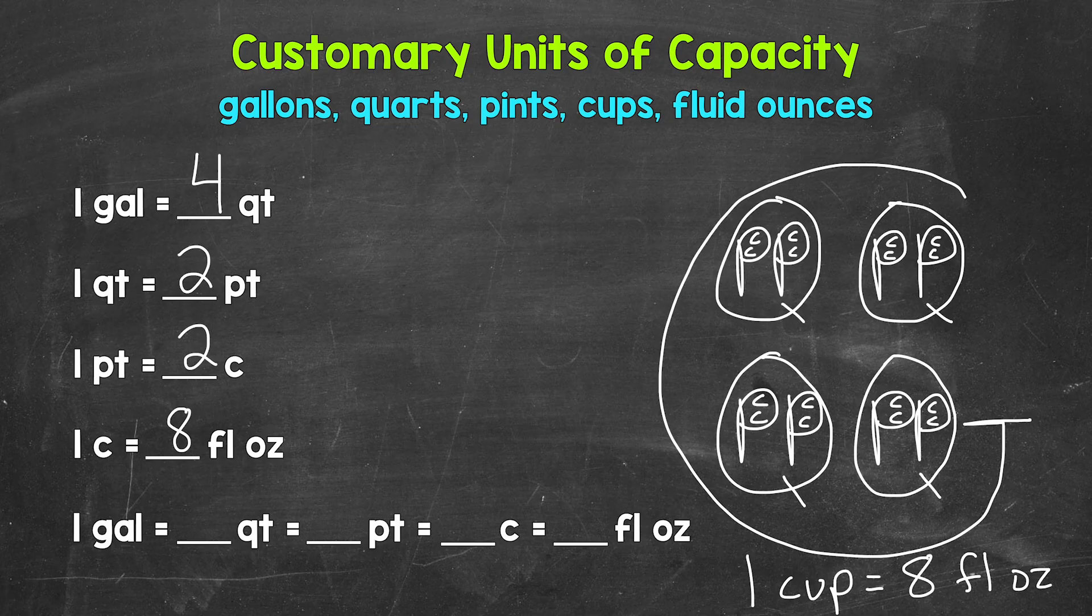And then lastly, let's start with one gallon and write how many quarts equal a gallon, pints, cups, and fluid ounces. So one gallon equals four quarts. There are four Qs in that big G. Then one gallon equals eight pints. There are eight Ps in that G.